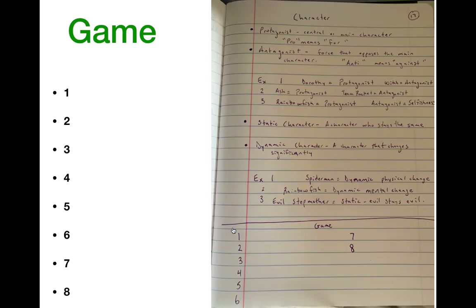Now I want to play a game. At the very bottom of my notes, I wrote the word 'game' and then numbered my paper 1 through 8. You don't need a ton of space for this game, so you don't need to skip a line. Go ahead and write 'game' underneath your notes for today.